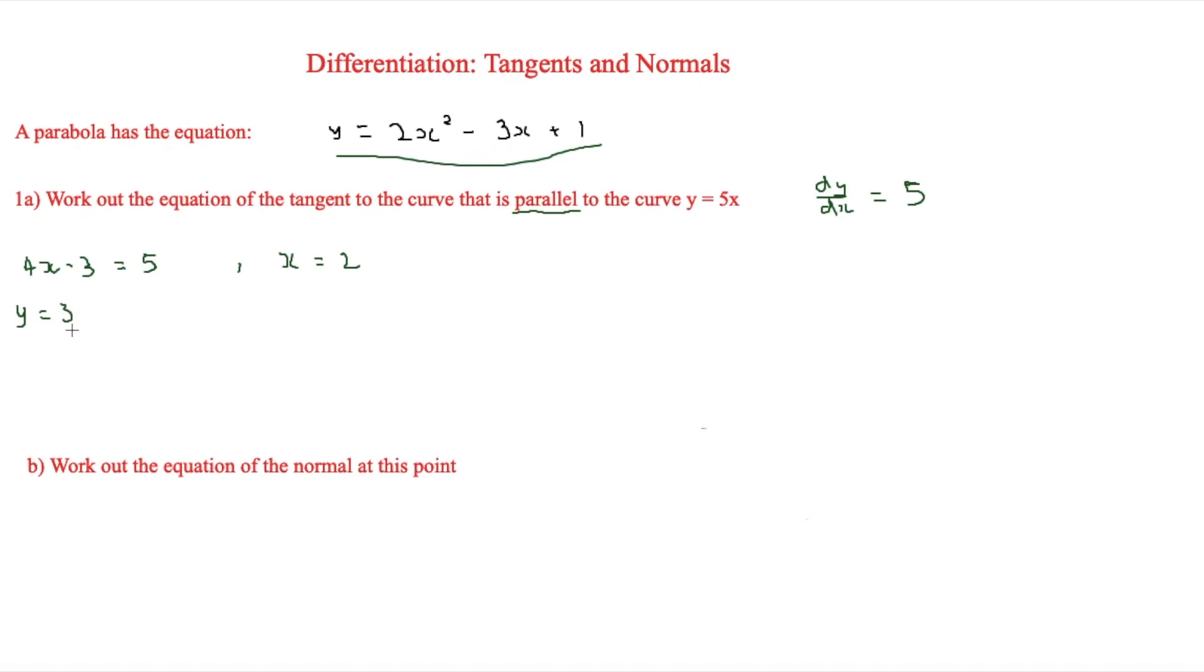And now after we've done this, we've essentially rearranged the question into a form that is nicer for us. So now we could rearrange this question as basically saying that y equals 2x squared minus 3x plus 1 at the point (2, 3).